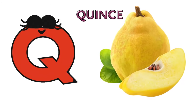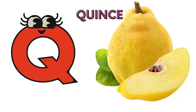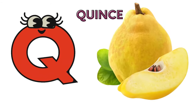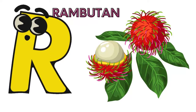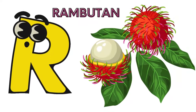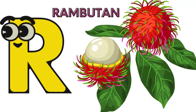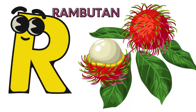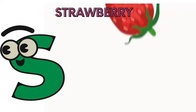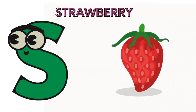Q is for quince, qu-qu-quince. R is for rambutan, r-r, rambutan.